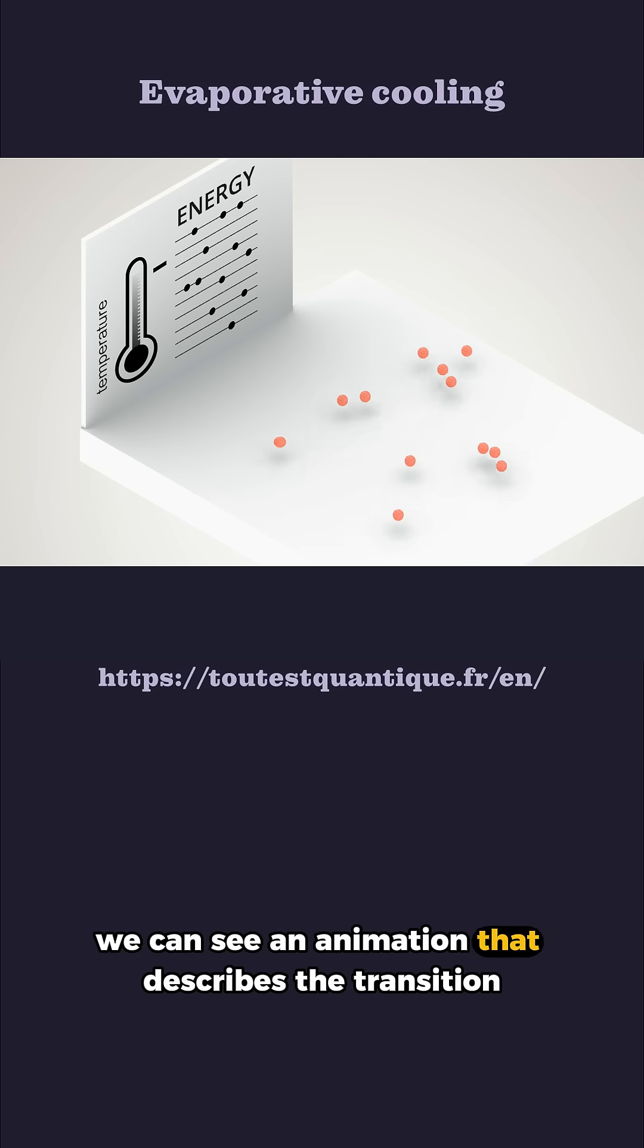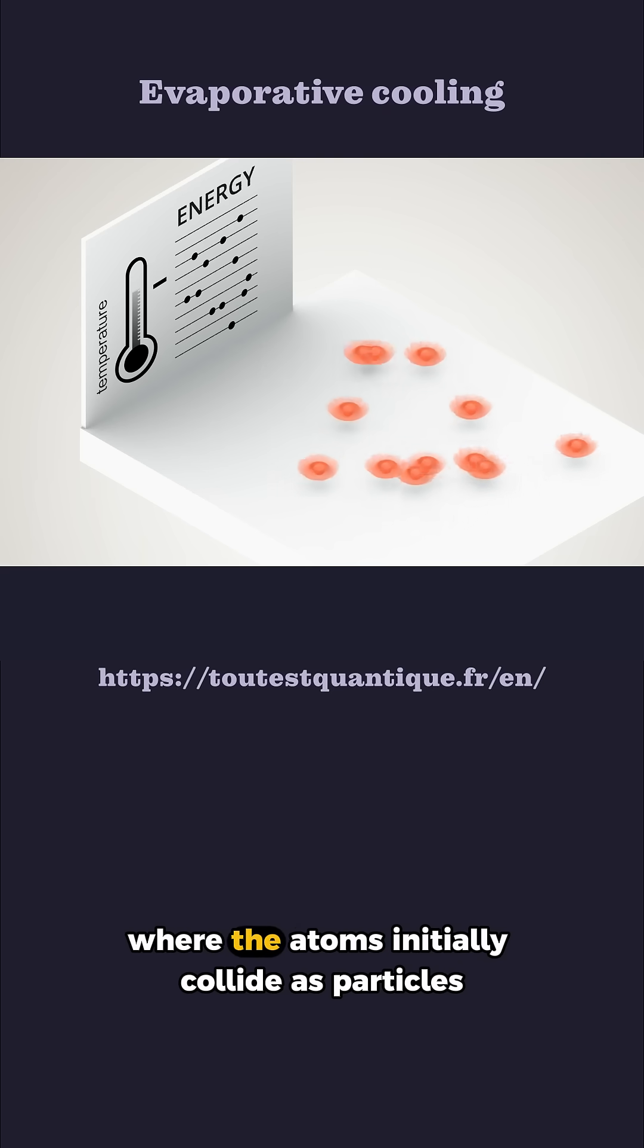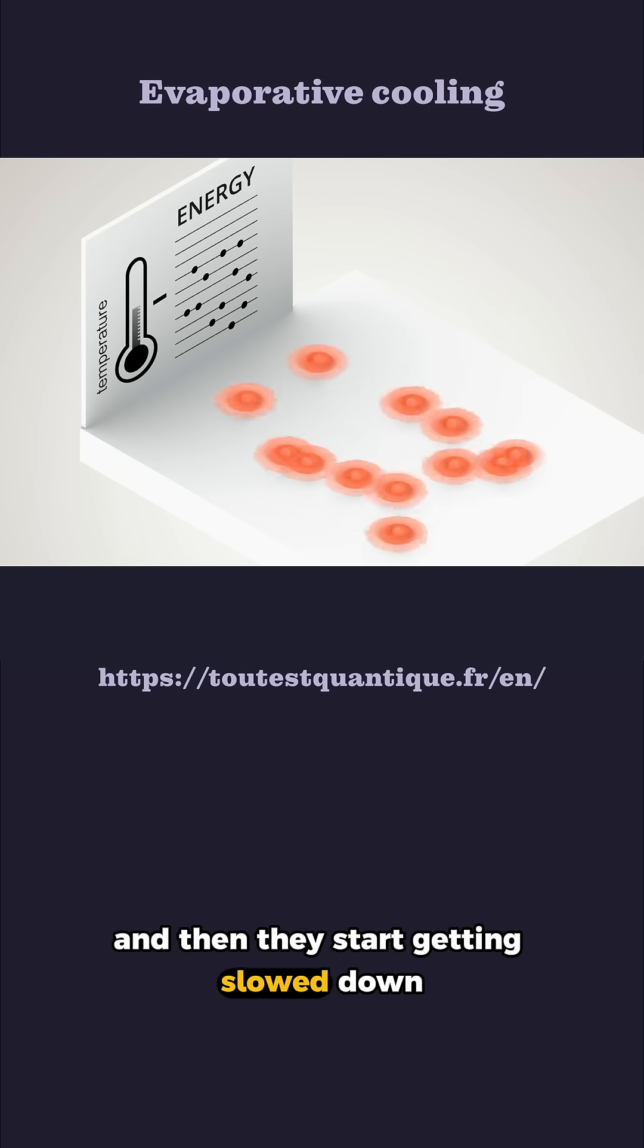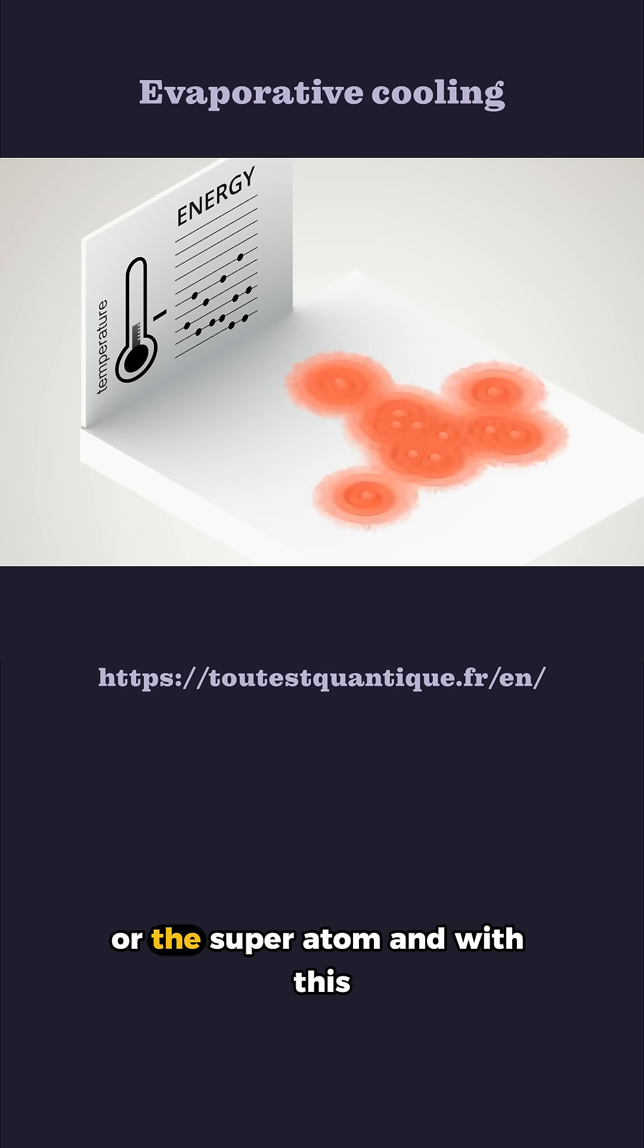Here we can see an animation that describes the transition from the classical to the quantum regime, where the atoms initially collide as particles, and then they start getting slowed down and they become eventually the Bose-Einstein condensate, or the superatom.